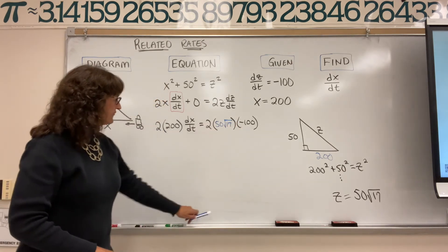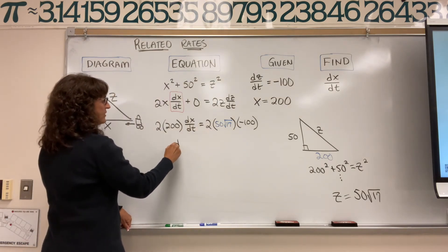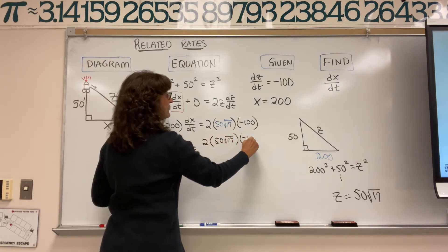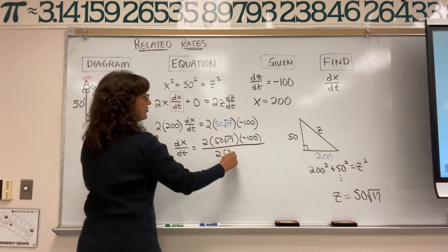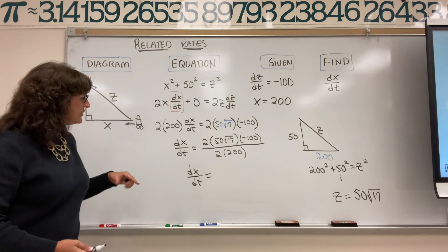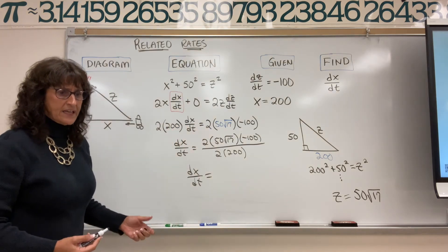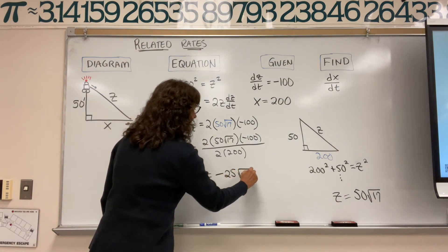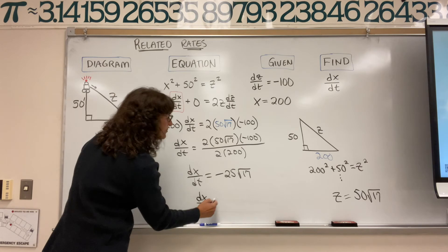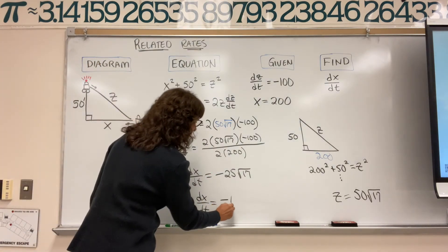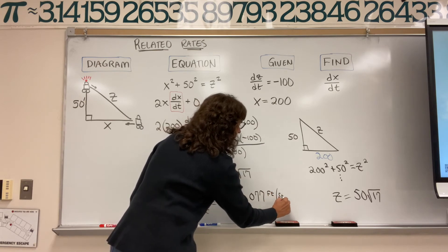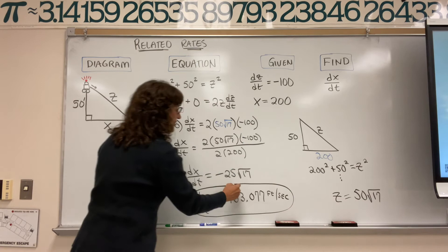Now we have all our numbers and we have to find dx/dt. So dx/dt equals 2 times 50√17 times negative 100, divided by 2 times 200. Multiply that together and divide by 400. When you compute all this — put it in your calculator carefully — you get negative 25 radical 17 as the exact answer. Or for a decimal approximation: negative 103.077 feet per second.